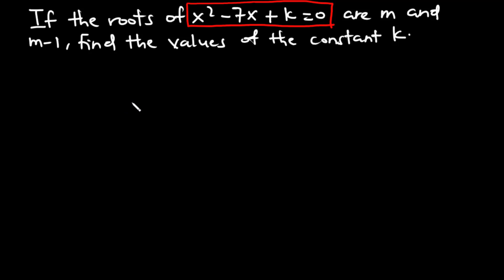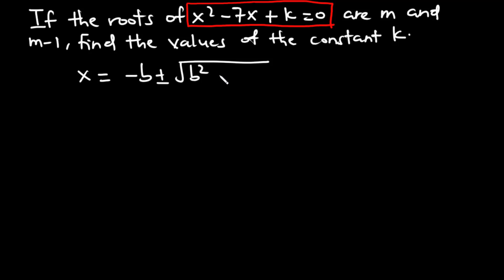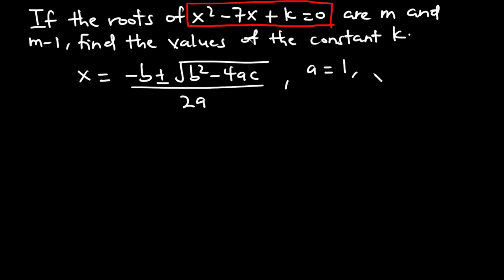We know that the roots of a quadratic equation are given by the general quadratic formula: x equals negative b plus or minus the square root of b squared minus 4ac, all divided by 2a. From the equation, A equals 1, B equals negative 7, and C equals K. Now let's substitute the values of A, B, and C into this equation.